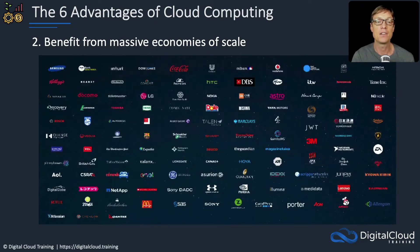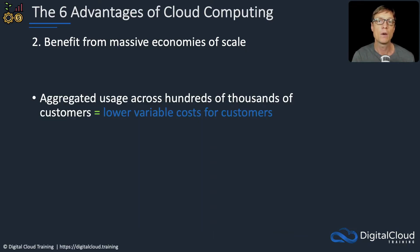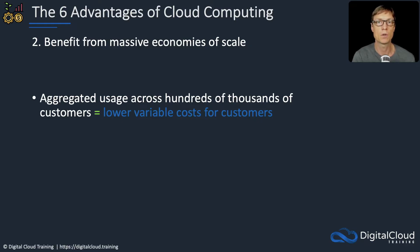The second advantage is that you get to benefit from massive economies of scale. This image shows some of AWS's thousands of customers, including some of the biggest and most well-known companies in the world. Because they have such a large customer base, they're able to aggregate usage across those customers, which gives them purchasing power to lower their costs — and they pass that on as a lower variable cost for you.